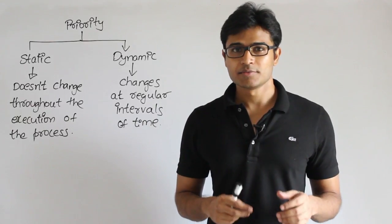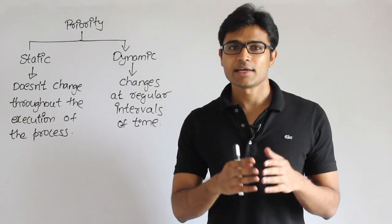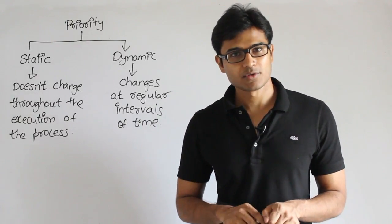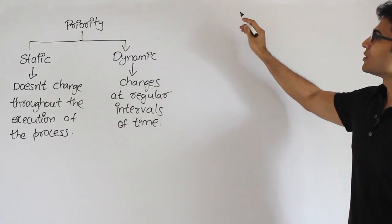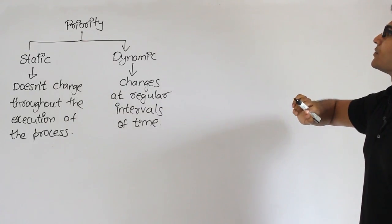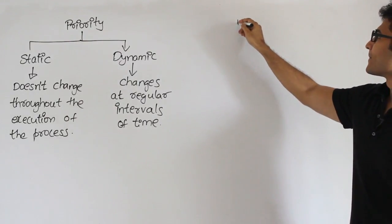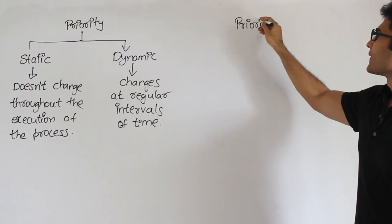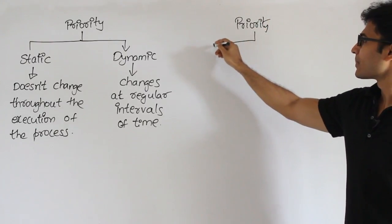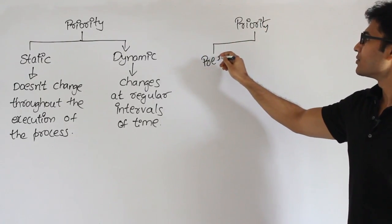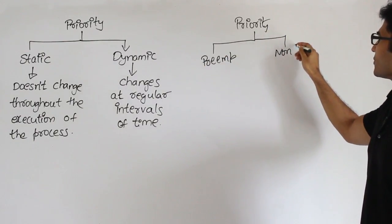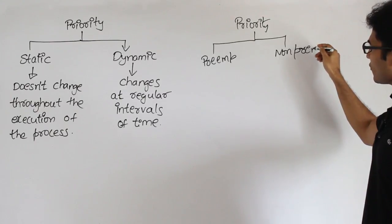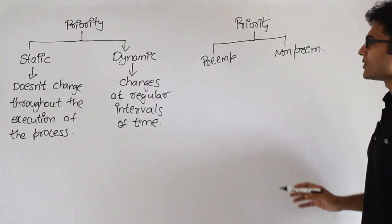Here the priority scheduling algorithm can be classified into two types: one is preemptive, another is non-preemptive. Like this the scheduling algorithms can be classified. One is preemptive, another is non-preemptive. So again, what is preemptive and what is non-preemptive is same as the previous one.